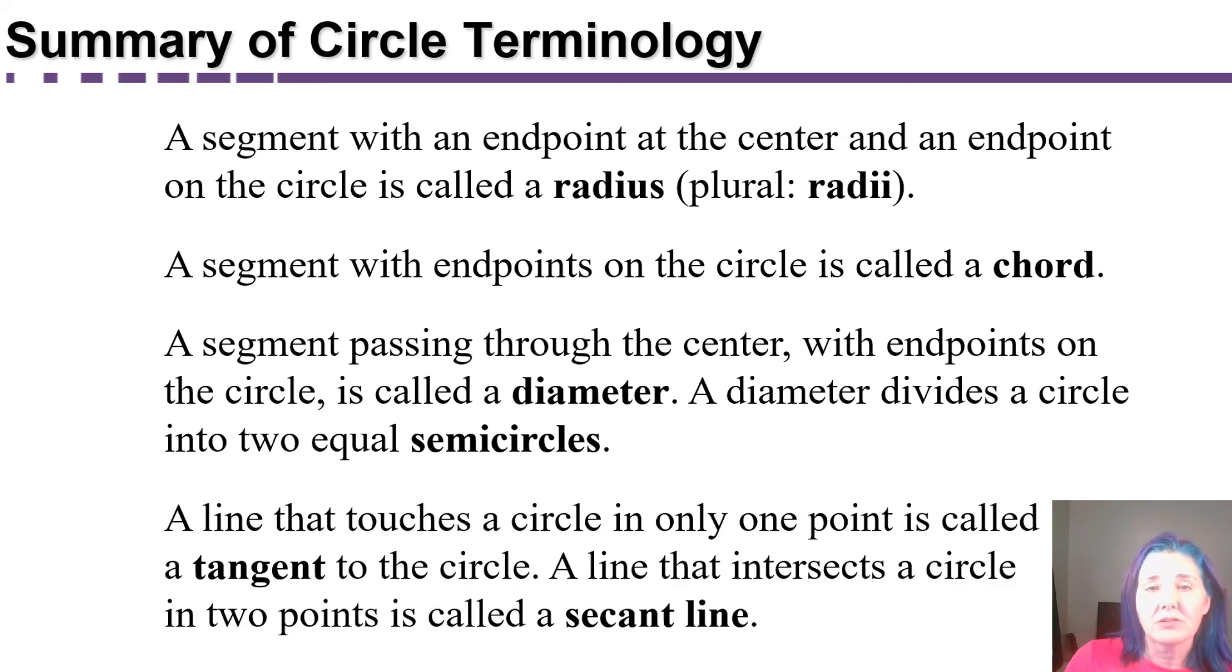A line that touches a circle in only one point is called a tangent to the circle. A line that intersects the circle in two points is called a secant line.